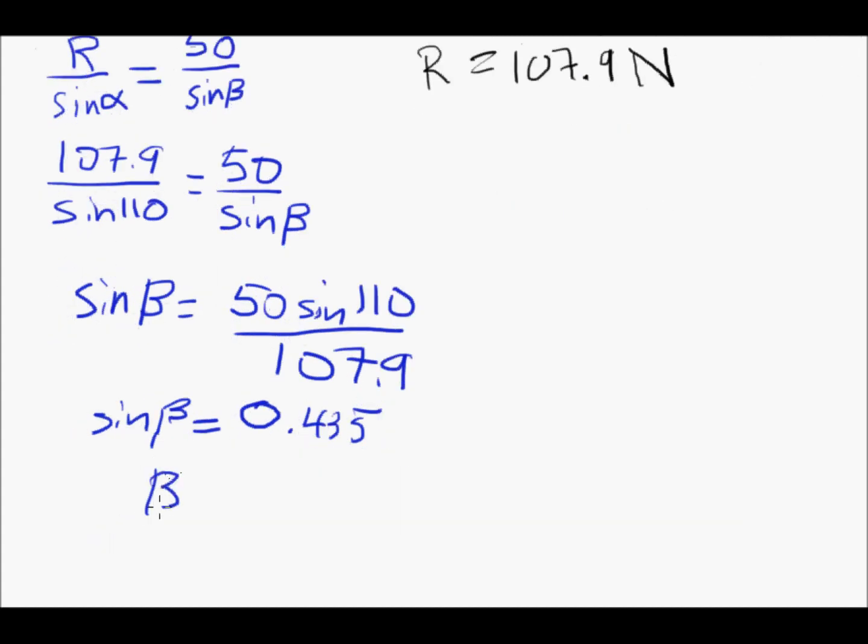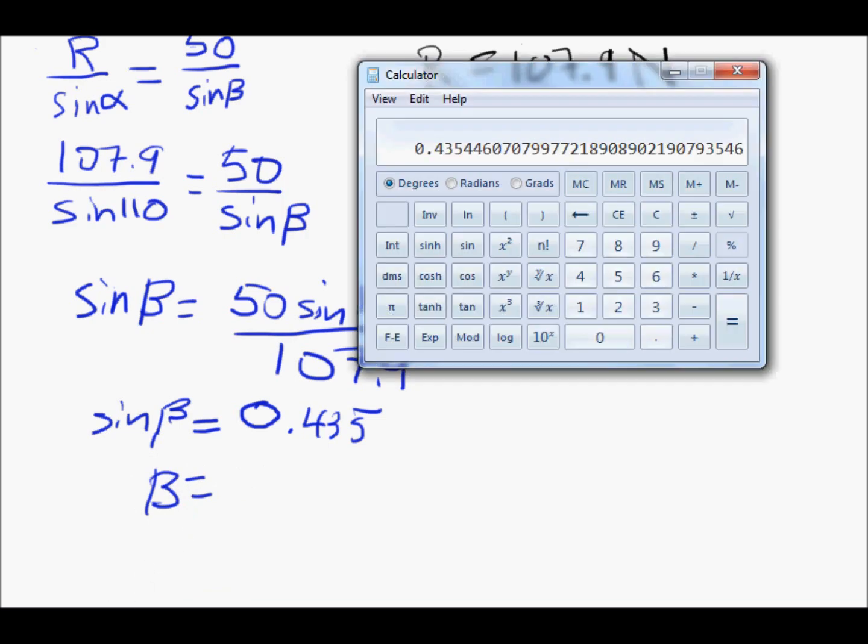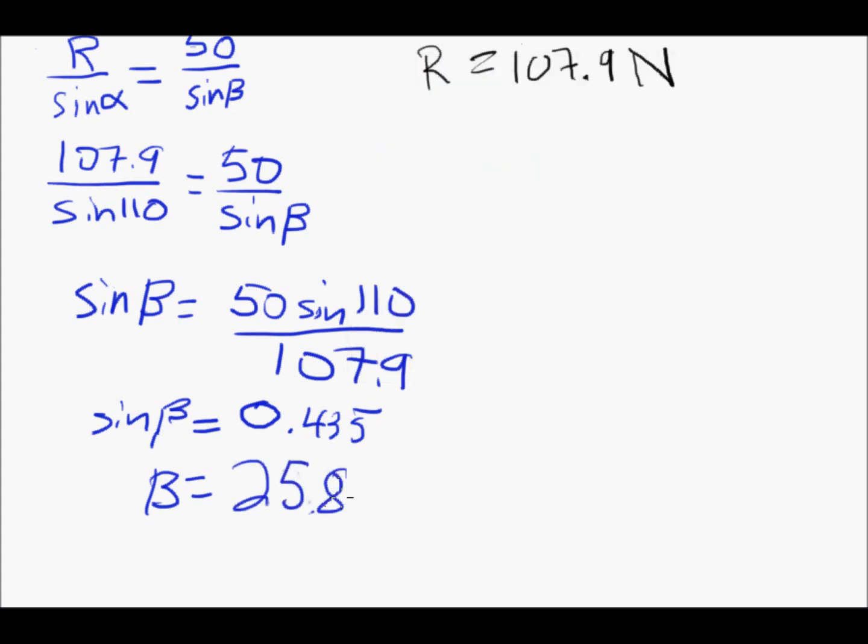Beta is then going to equal the inverse sine of that. So I'll just say inverse sine and you get 25.8. 25.8 degrees.